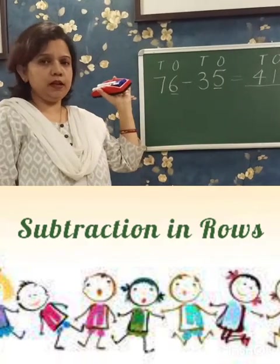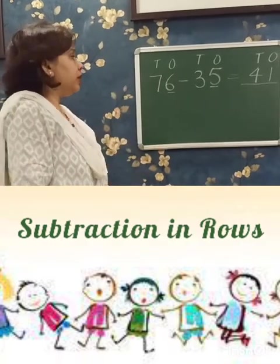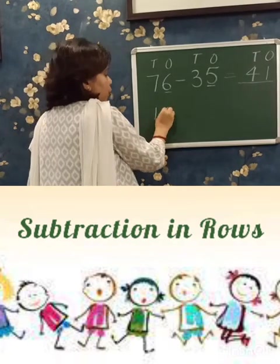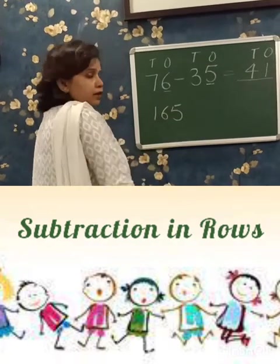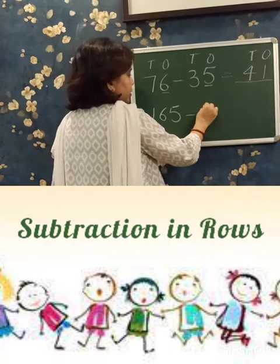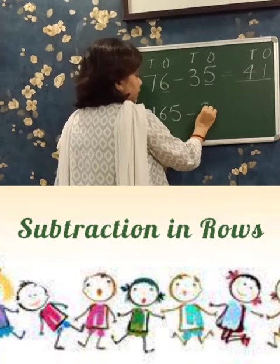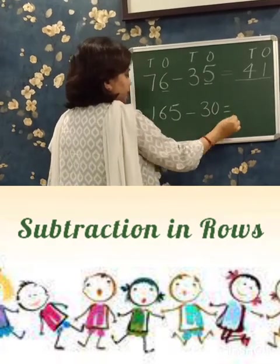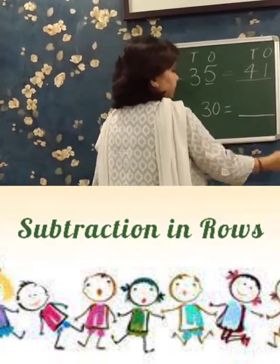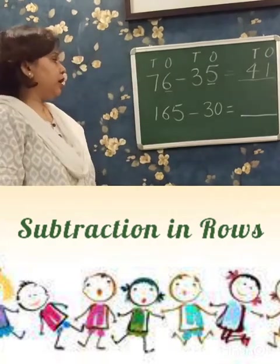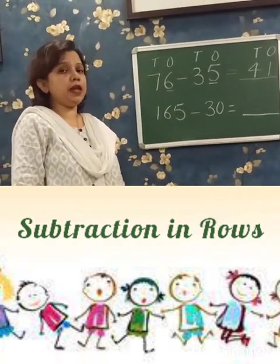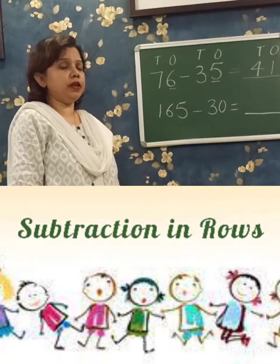Is it clear? Now look at another example. 165 minus 30. First you write the places above the numbers.